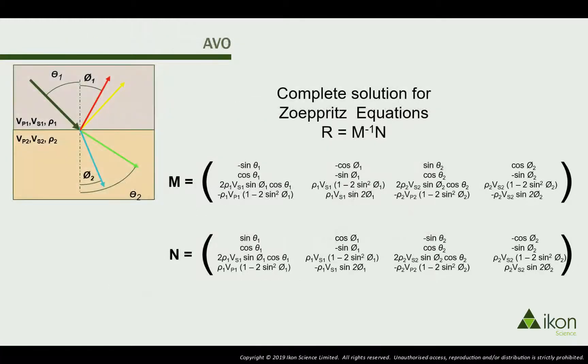We have already seen that elastic moduli can be derived from VP, VS, and rho. The same is true of reflectivity, as is the case with the Zoeppritz equations, as well as approximations such as Aki-Richards and Shuey.